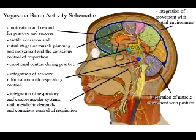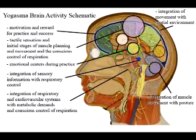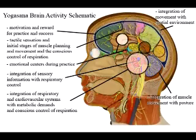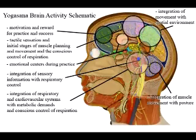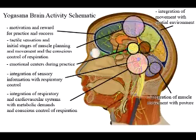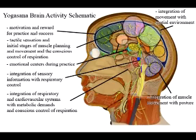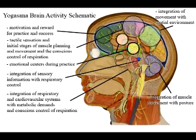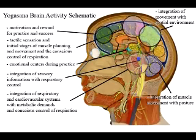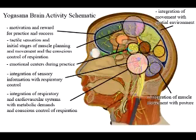Most of what happens during yoga asana occurs in changes in the brain. This schematic represents the various areas of the brain and what each area might be concerned with while we practice. One of the major goals of practice is to slow down this brain activity, to coordinate it, and to make it graceful.